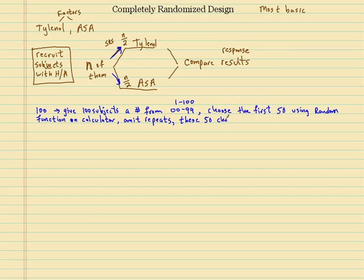These 50 chosen will get Tylenol, while the remaining get Aspirin. That's a good way to explain how to do the SRS. There's many different ways. That's one good way.